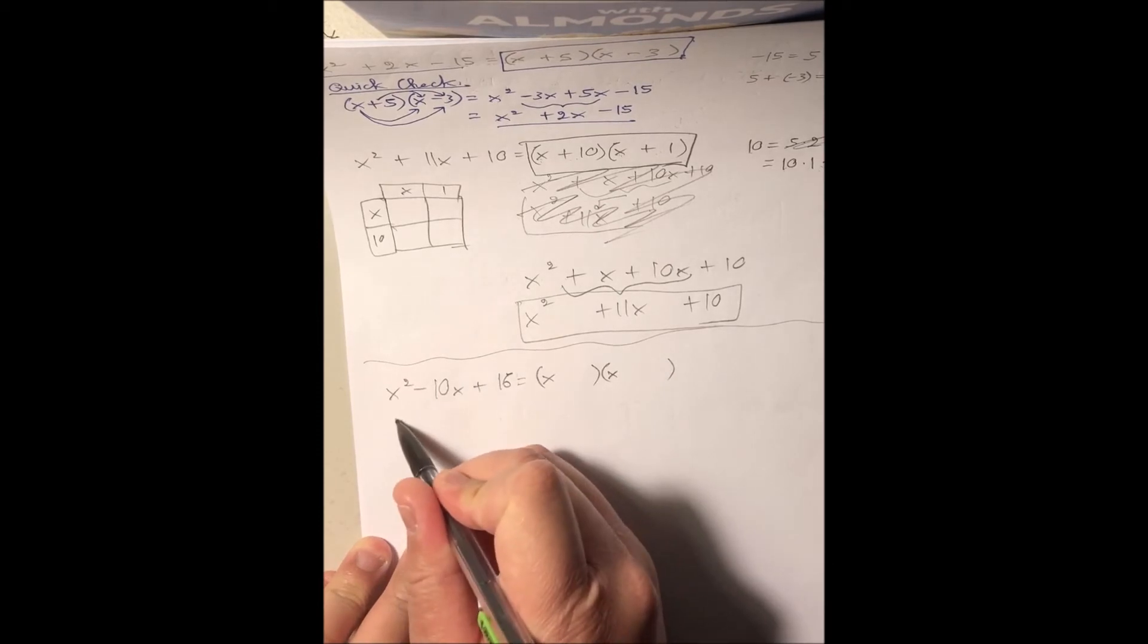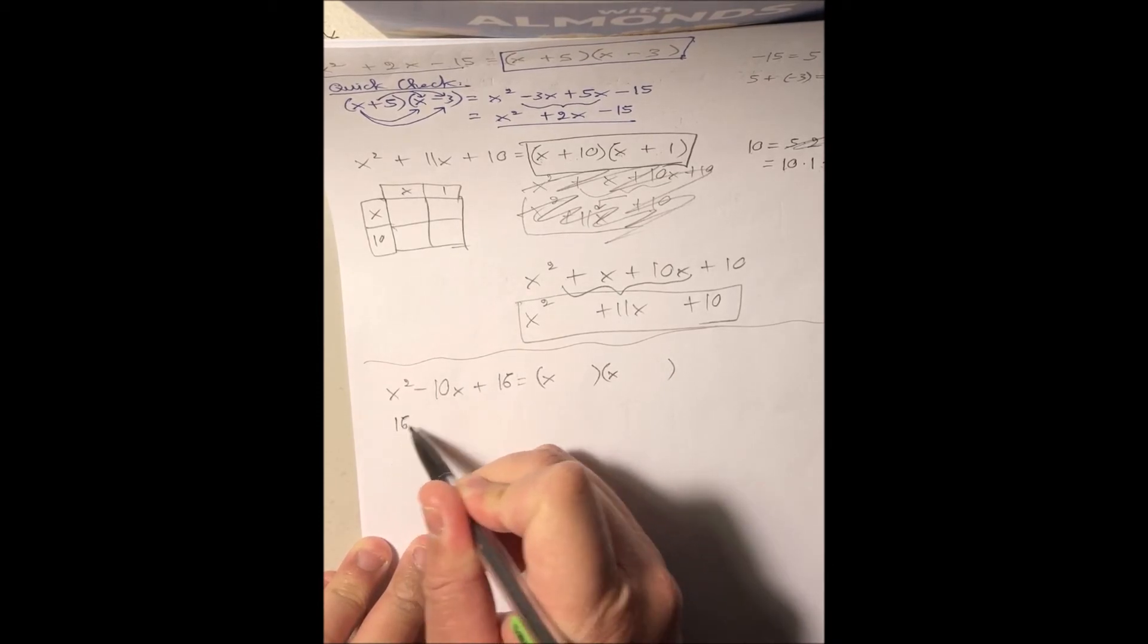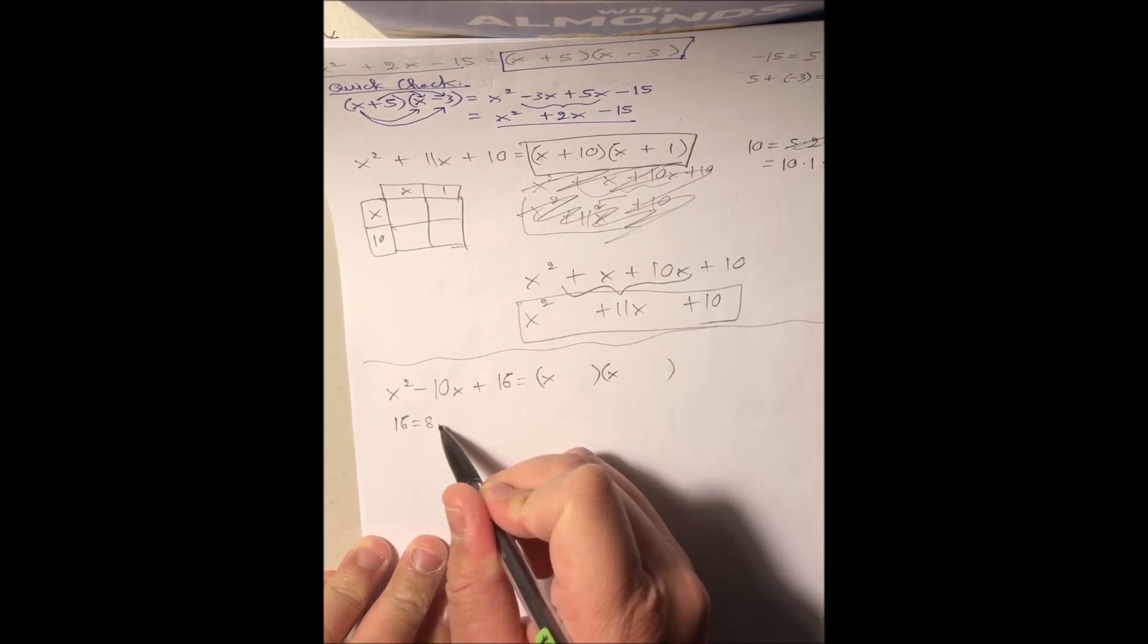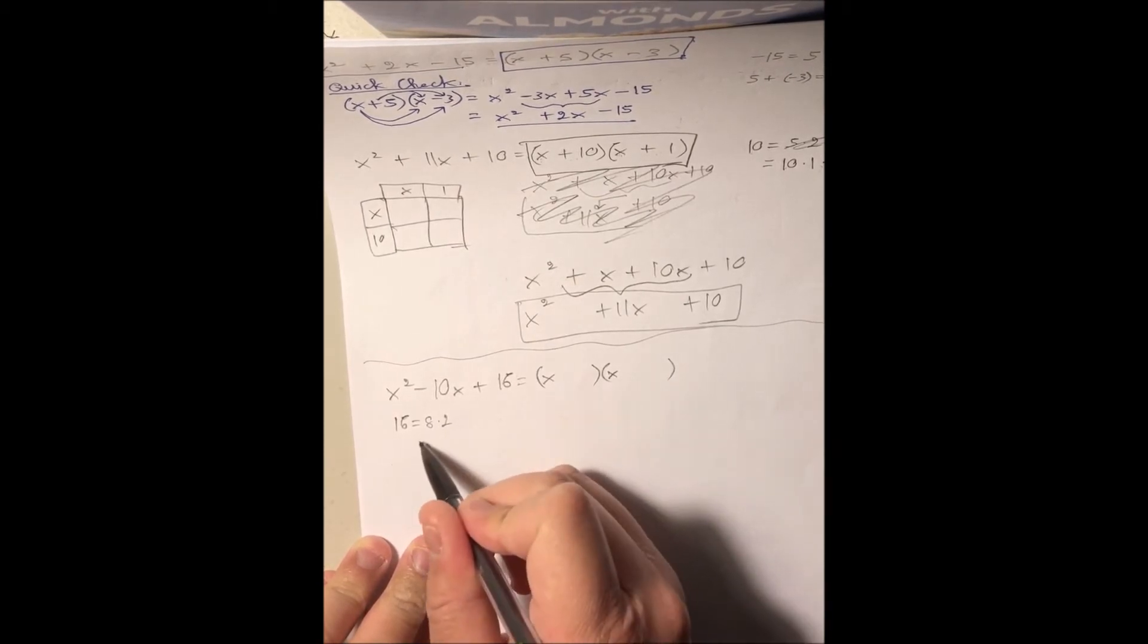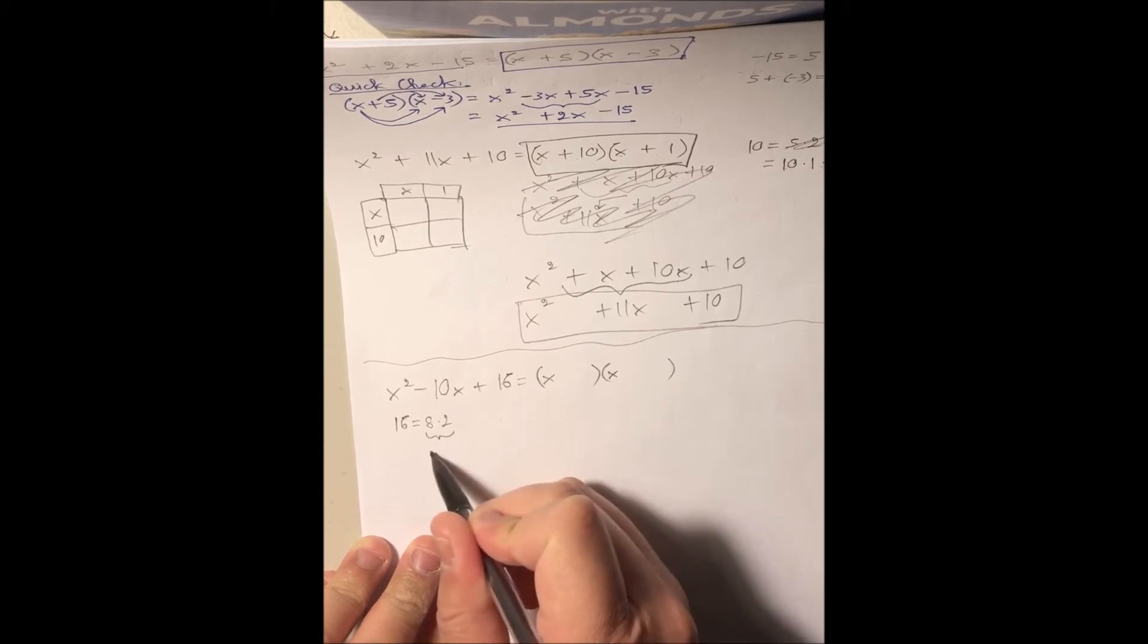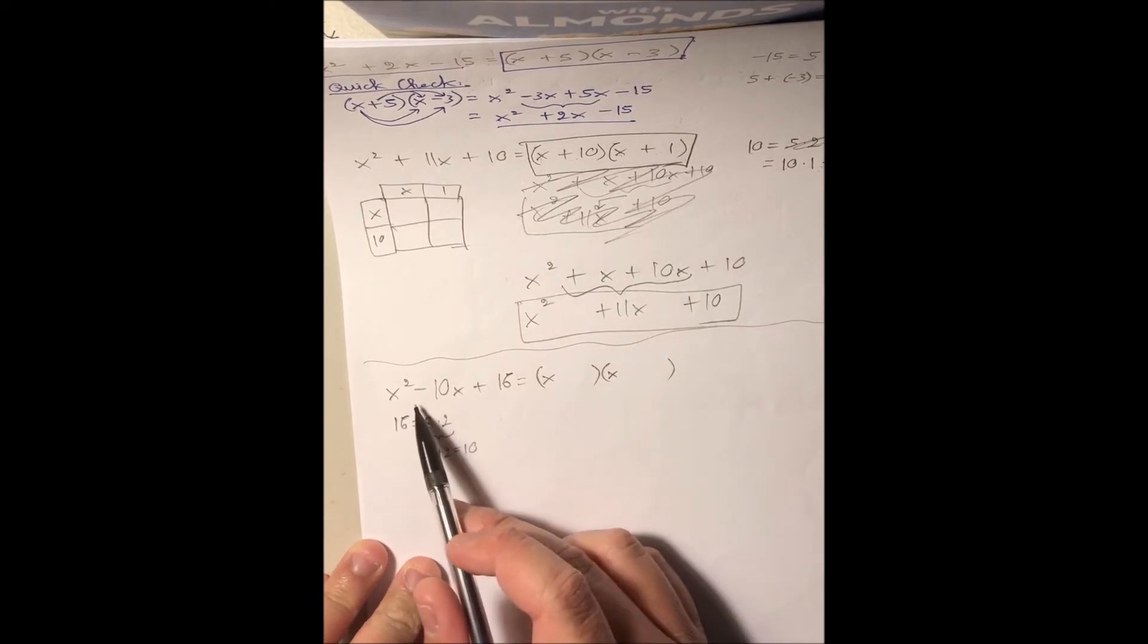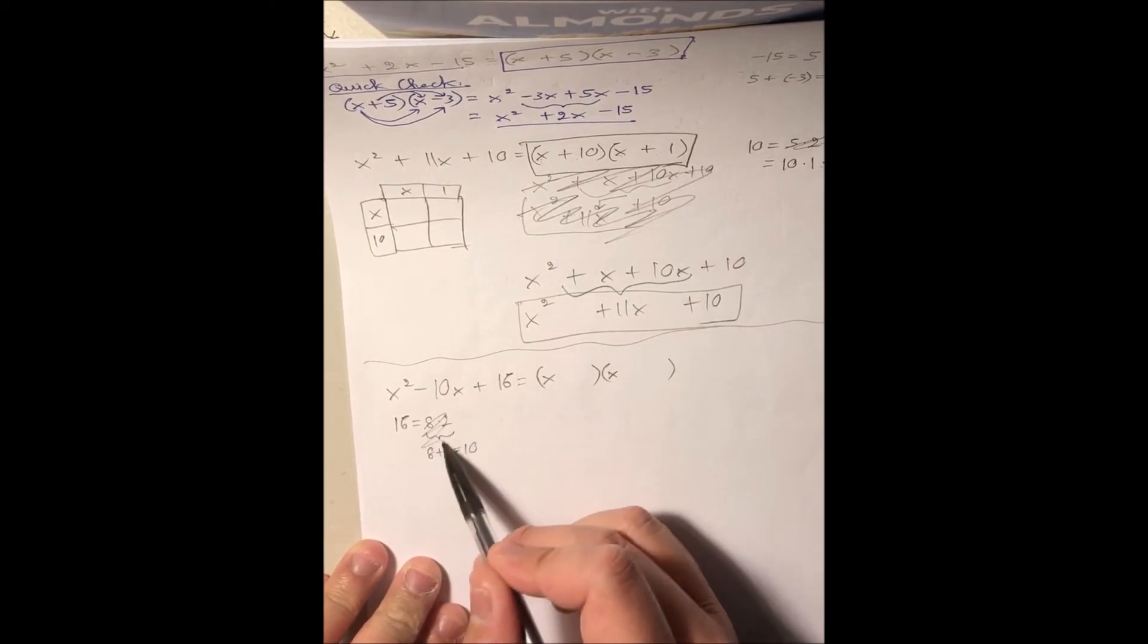Well, let's see, 16... Let's try positive 8 times positive 2. Positive 8 times positive 2, if we were to add them together, that's positive 10, which is super close to what we want, but we want negative 10, not positive 10. So this is out.